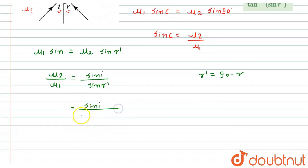Now we know that sine (90 minus θ) equals cosine θ. So here this will become sine i upon cosine r.